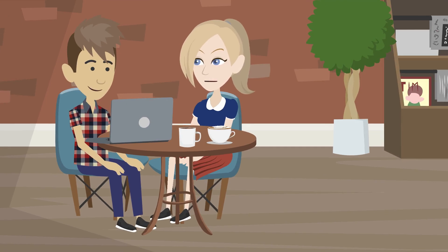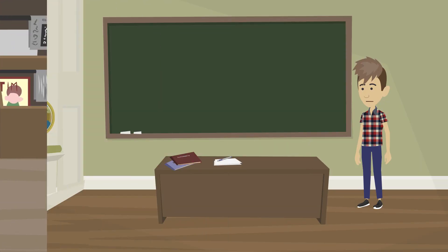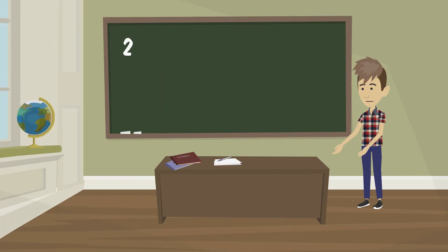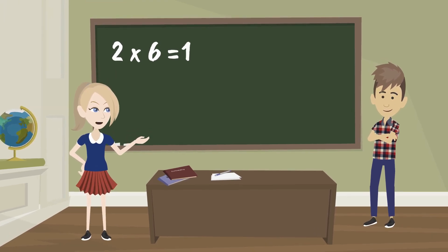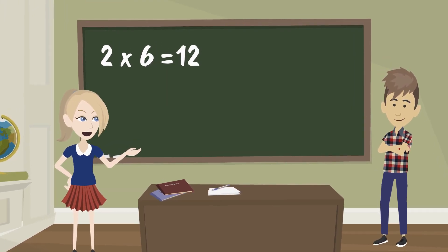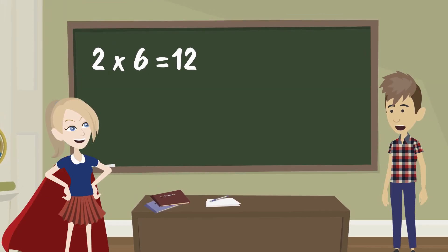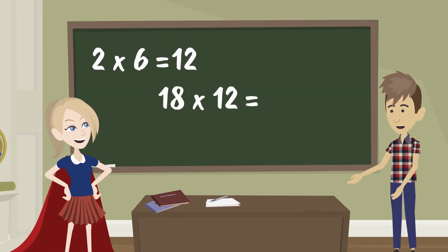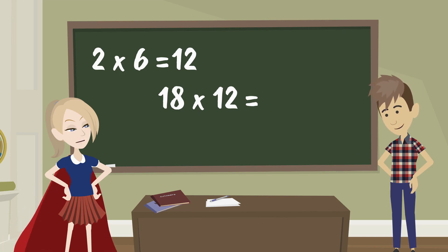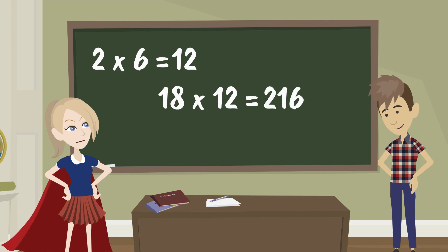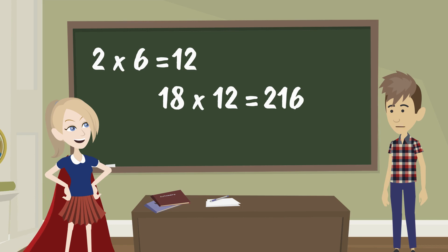I love math. Tell me, what is 2 times 6? 2 times 6 is 12. Good. What is 18 times 12? Easy peasy. 18 times 12 is 216. Good job.